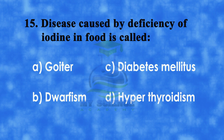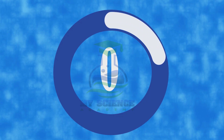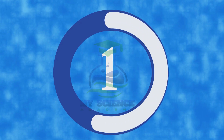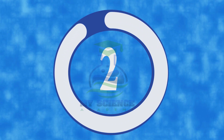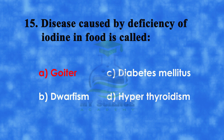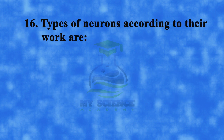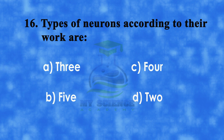Number 15: Disease caused by deficiency of iodine in food is called. A: goiter, B: dwarfism, C: diabetes mellitus, or D: hyperthyroidism. And correct answer is A: goiter.